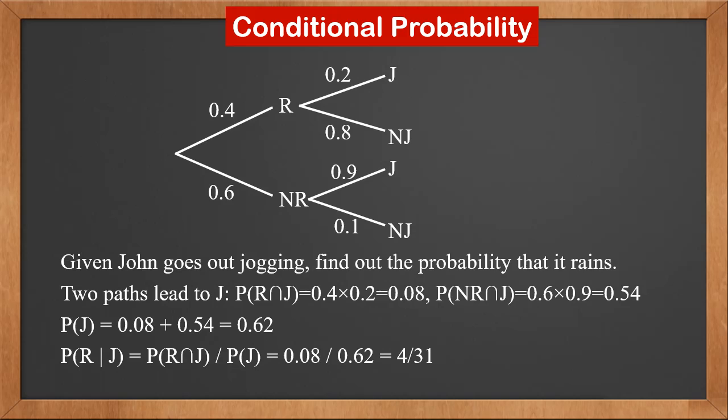Usually, when we try to find conditional probability with tree diagrams, we divide the probability of one path by the sum of probabilities from several paths. In the above example, the conditional probability is the division of one path by the sum of two paths.